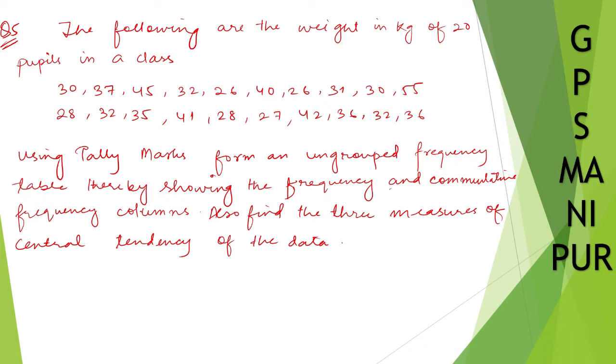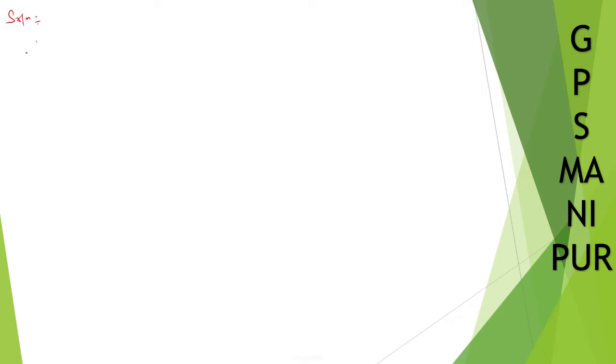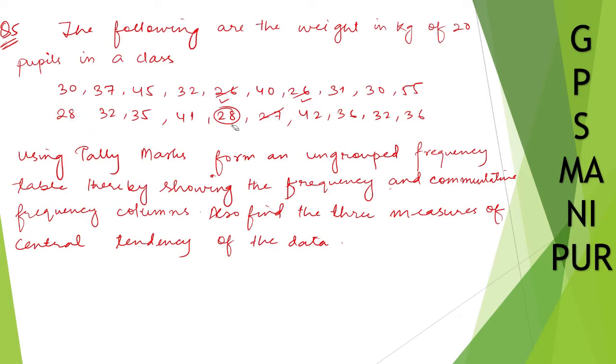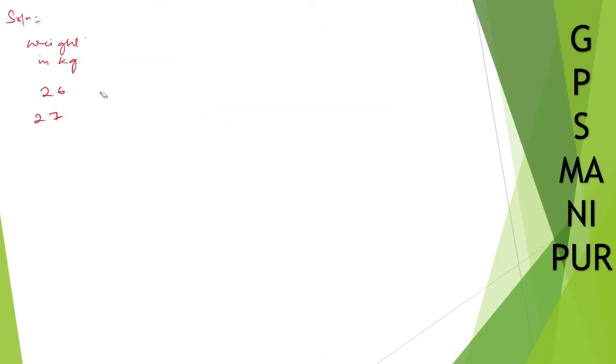So we need to form a frequency table using tally marks. Let us write down first weight in kg. Write in order: 26, 27, 28, 30, 31, 32, 35, 36, 37, 40, 41, 42, and 45. So these are the weights in kg given in our data.